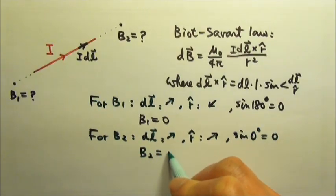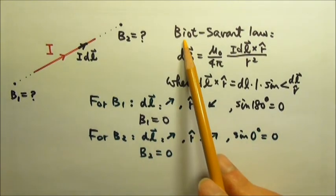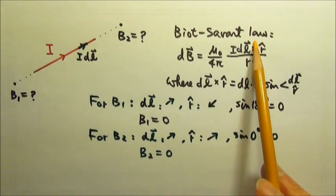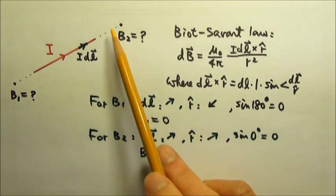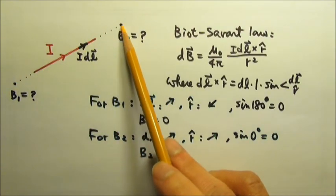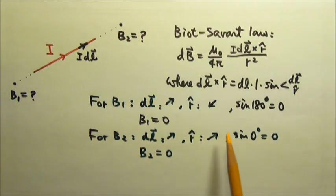Therefore B2 is also zero. So this tells us that the magnetic field due to any straight current anywhere along the straight current is zero, because the sine of the cross product is zero.